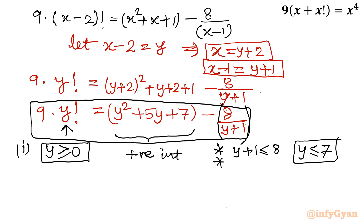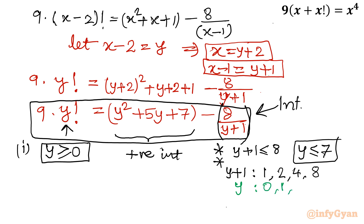One more restriction: for 8 over (y plus 1) to be an integer, (y plus 1) must divide 8 completely with remainder 0. The divisors of 8 are 1, 2, 4, and 8 only. So y plus 1 equals 1, 2, 4, or 8, which means y equals 0, 1, 3, or 7. Overall, we only need to check these four values. Our solution is among 0, 1, 3, and 7.